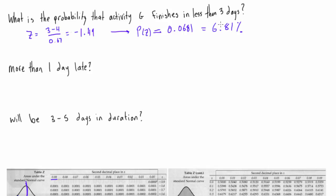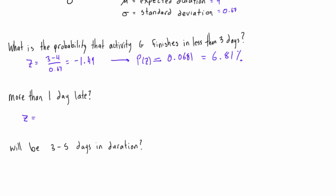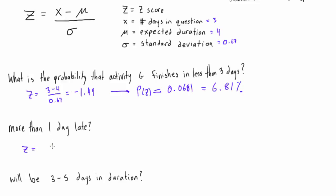Now let's look at the alternative: what if it's more than one day late? Our x won't be 1 here — 'more than one day late' means knowing our expected duration is 4, our x would actually be 5 (4 plus 1). So we have 5 minus 4 over 0.67, which gives us positive 1.49.